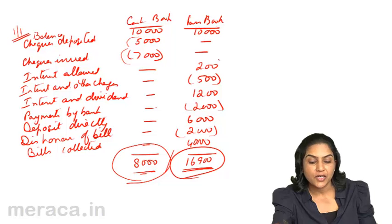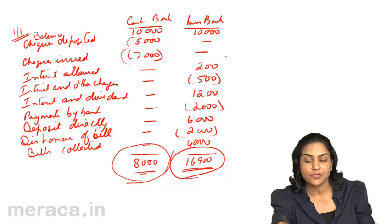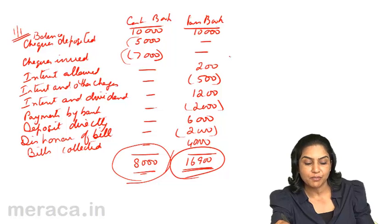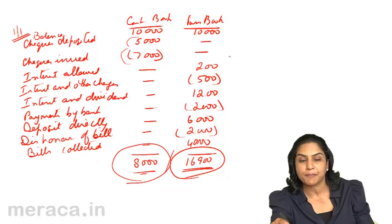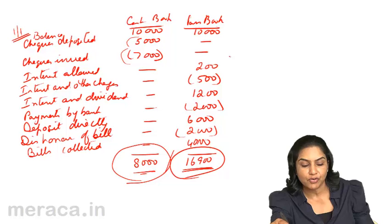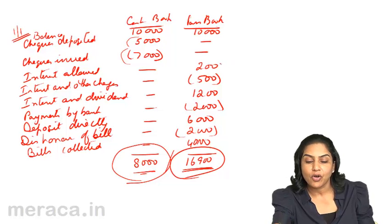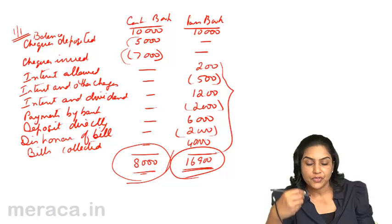Further causes include: interest allowed by the bank, interest and charges charged by the bank, interest and dividends collected by the bank, direct payments made by the bank, amounts deposited directly by the customer, and dishonour of a bill discounted with the bank.